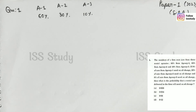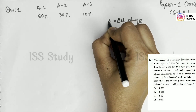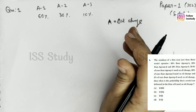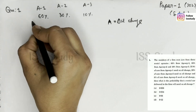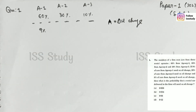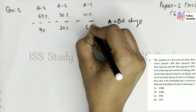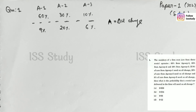If 9% of cars from agency 1 need an oil change — so here a word added which is oil change, and I'm assuming this as event A, representing oil change — 20% of the cars from agency 2 need an oil change, and 6% of cars from agency 3 need an oil change. Then what is the probability that a rental car delivered to the firm will need an oil change?